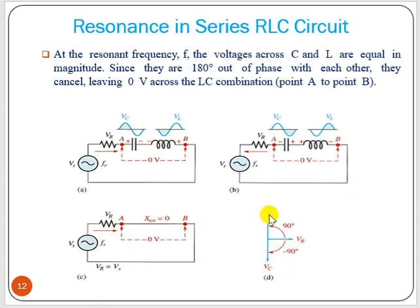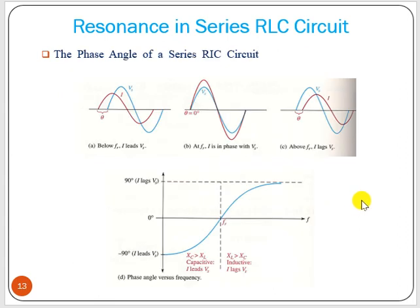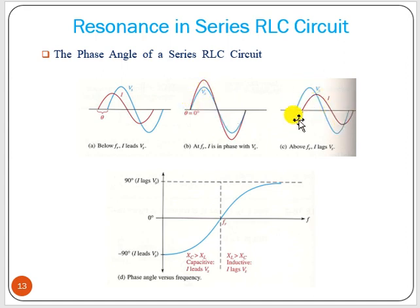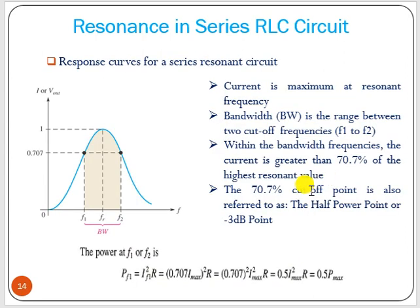In the phasor diagram: VR is in phase with current; VL leads by 90 degrees and VC lags by 90 degrees, so VL and VC are 180 degrees out of phase. For a capacitive circuit, V and I have a 90-degree leading relationship; for an inductive circuit, current is lagging. At the resonant frequency the phase angle is zero — it goes from −90 degrees, reaches zero at resonance, then goes to +90 degrees.